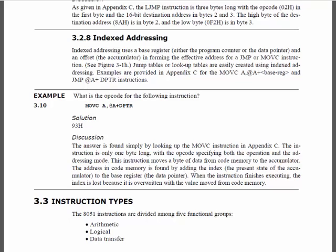So those are all the various addressing modes. The jumps and call commands use relative addressing, absolute addressing, and long addressing — those three are used with jump commands. The most common ones we're going to be using are register addressing, immediate addressing, and indirect addressing — those three we'll probably use most often. Now we're going to get into the instruction set.